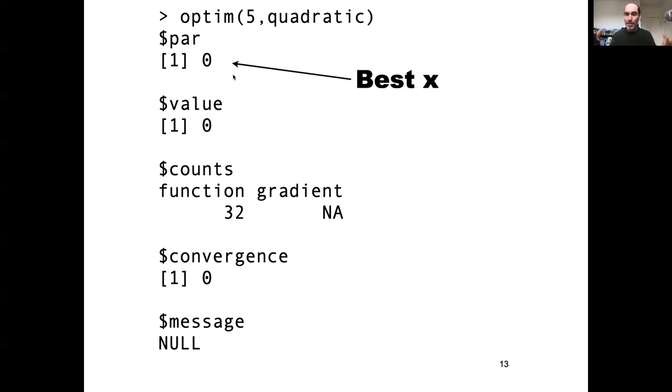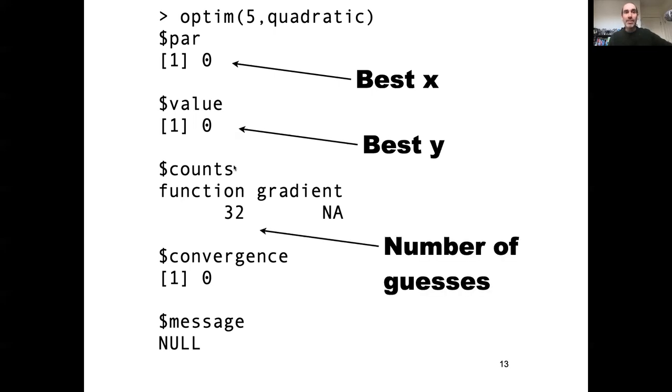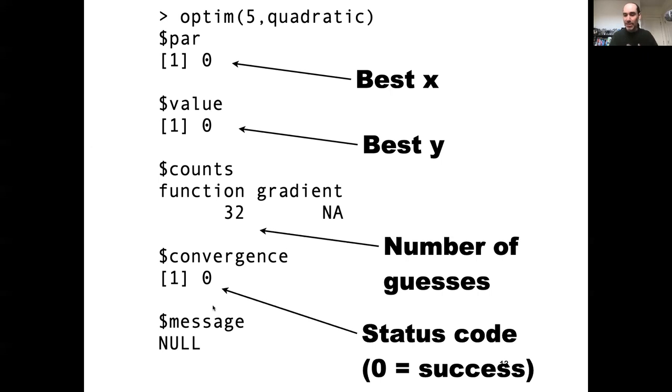And so here it comes that the best x is at 0, which is, as I think many of us would recall, would be the analytical solution here. If you have a parabola, just x squared, it passes through 0, 0. That's the minimum. So the best x is 0, the best y is 0. It took 32 guesses to find that from starting at 5. And it was success in its status. So it successfully converged.